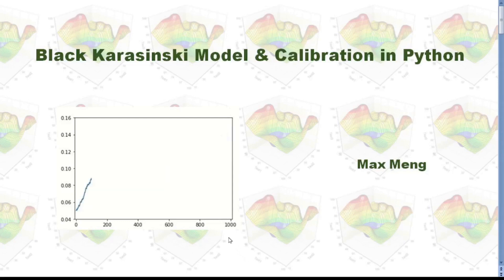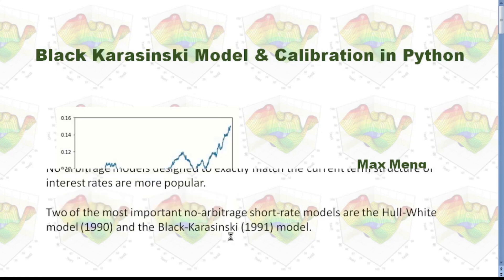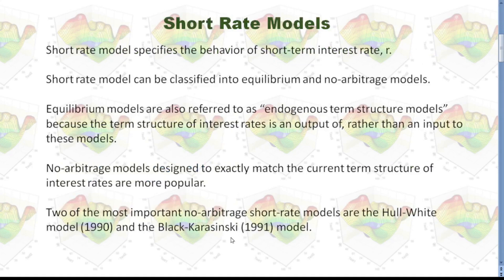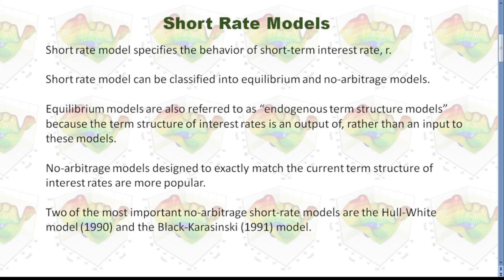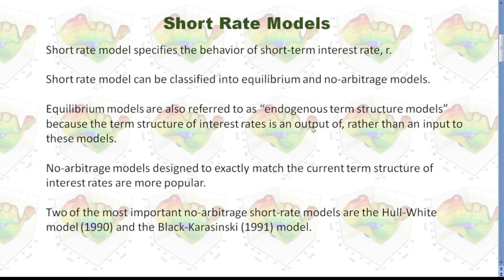I'm going to talk about the Black-Karasinski model and its calibration in Python. First, let's check out what short rate models are. A short rate model specifies the behavior of the short-term interest rate. Short rate models can be classified into equilibrium and non-arbitrage models. Equilibrium models are also referred to as endogenous term structure models because the term structure of interest rates is an output of, rather than input to, these models. No-arbitrage models, designed to exactly match the current term structure of interest rates, are more popular. Two of the most important non-arbitrage short rate models are the Hull-White model and the Black-Karasinski model.